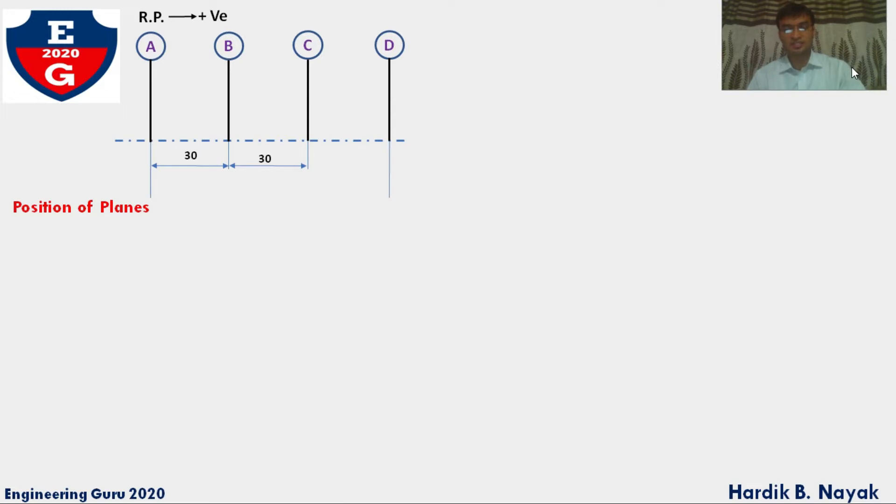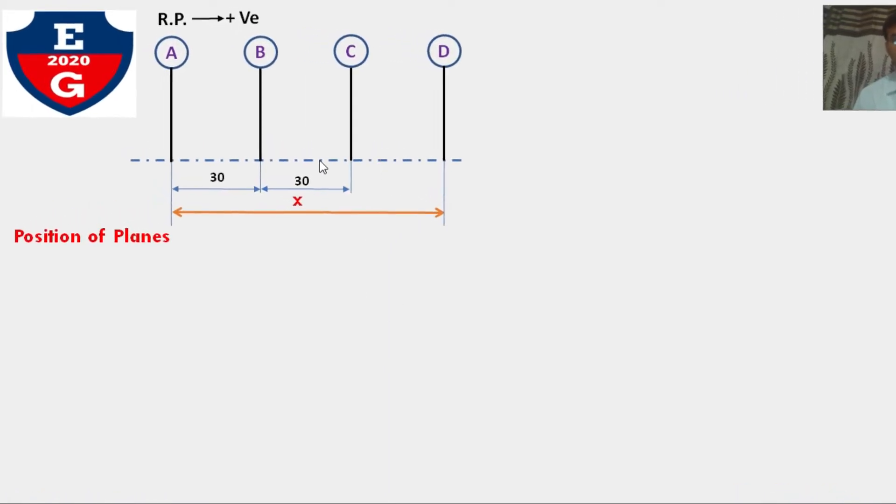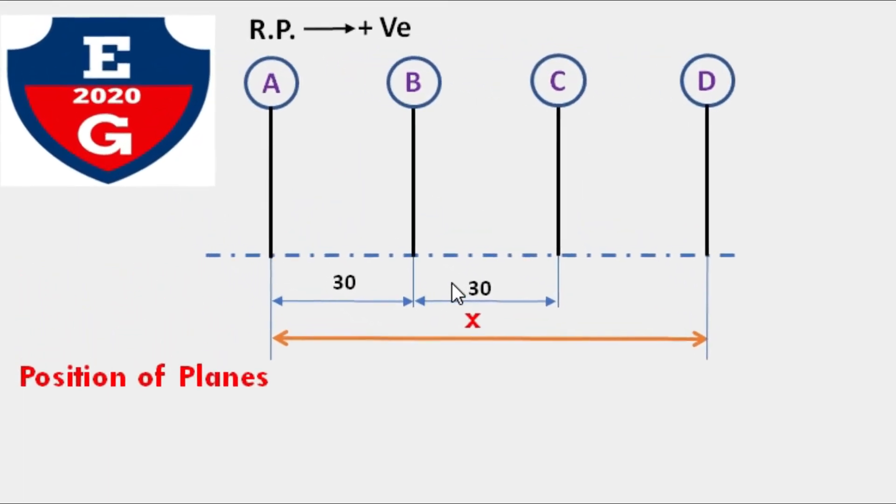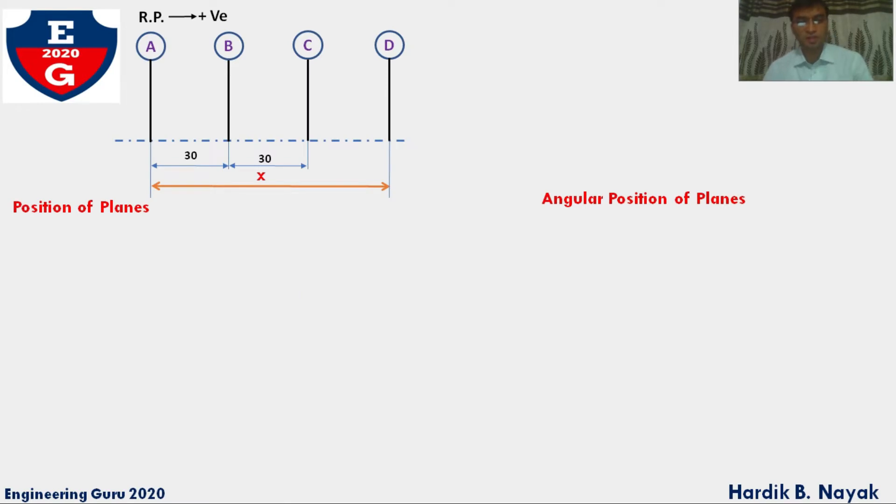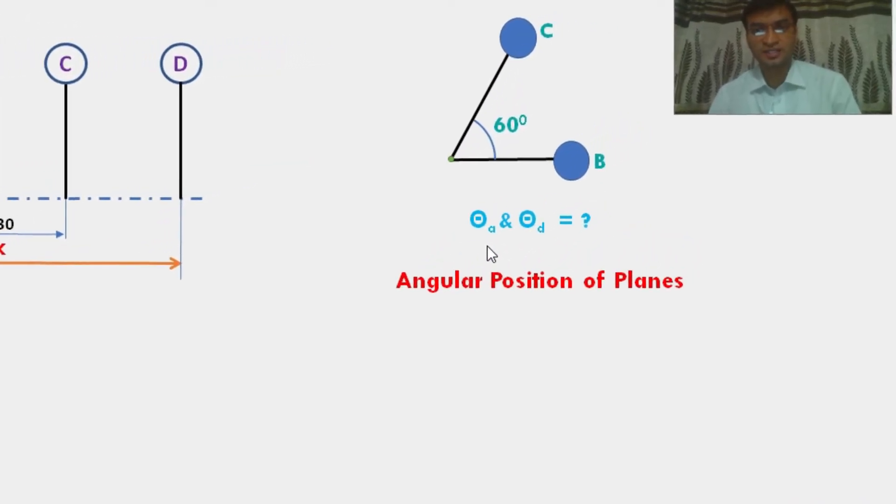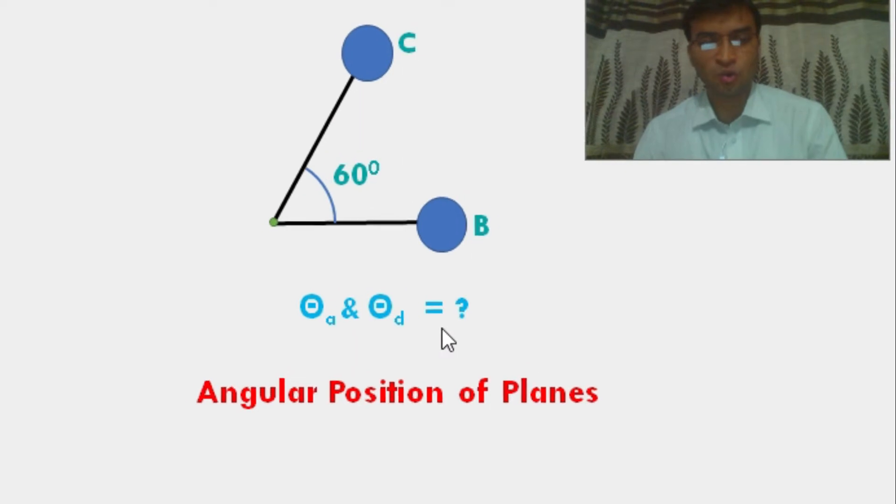Now, how can we find this total length? Here I will share a new trick for solving this type of problem. Let's assume total length equal to X, as shown in figure. Second, the angular position of planes as per given data. Here you can see the only given angle between B and C is 60 degrees. We have to find theta A and theta D angles.